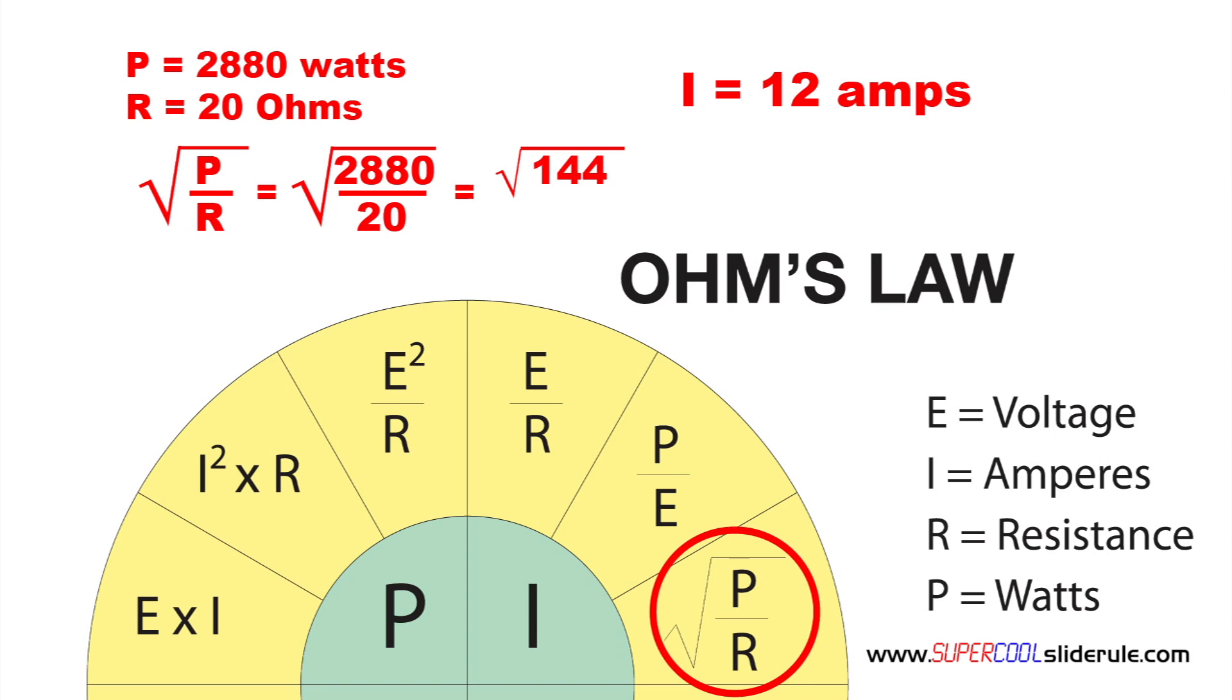So let's try 12. 12 times 12 equals 144. Sure enough. So 2880 watts with a resistance of 20 ohms should equal 12 amps.